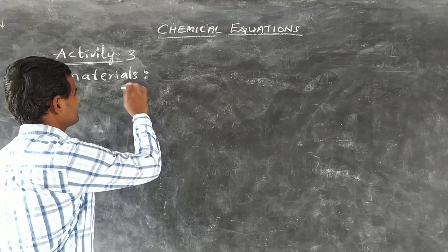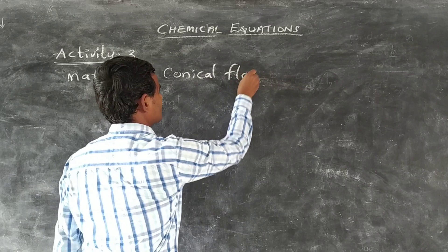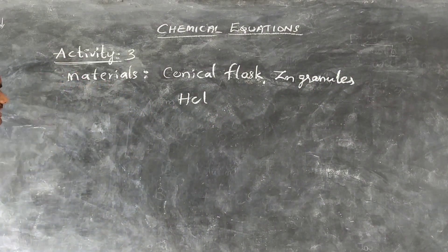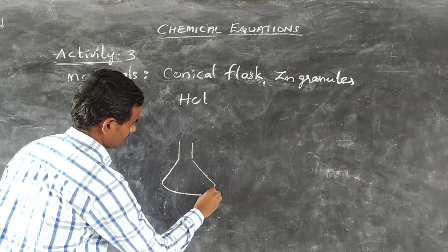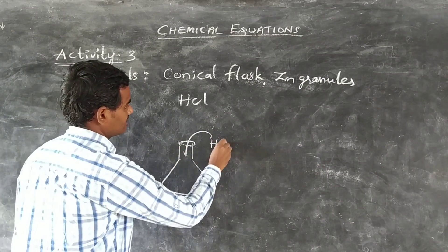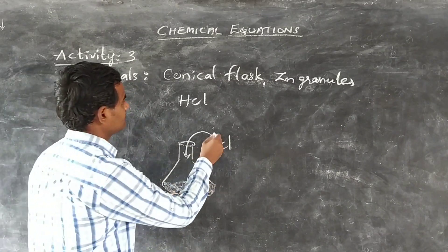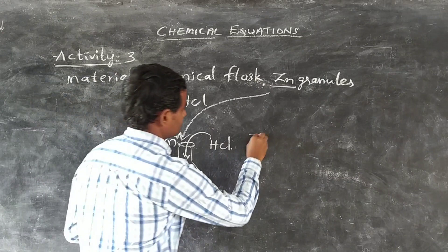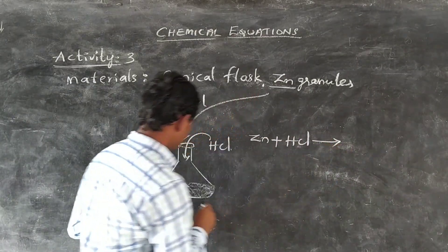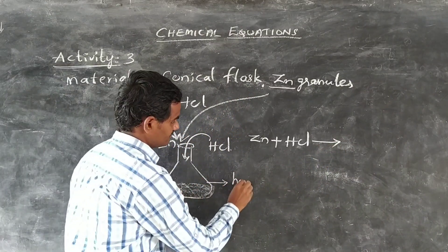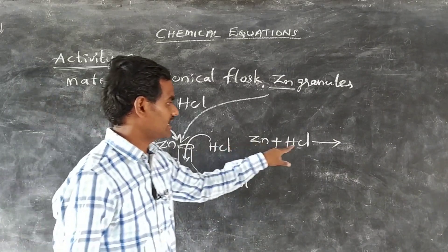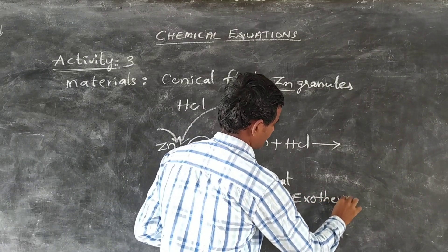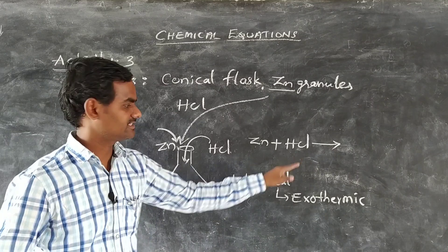We will see one more activity — Activity 3. The materials required are a conical flask, zinc granules, and hydrochloric acid. First, take one conical flask, add hydrochloric acid, and then add a few zinc granules to the hydrochloric acid. Zinc reacts with the hydrochloric acid, and if we touch this conical flask, it becomes hot — heat is liberated. This means it is an example of an exothermic reaction. The reaction of zinc with hydrochloric acid is an example of an exothermic reaction.